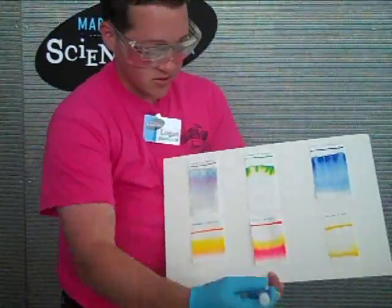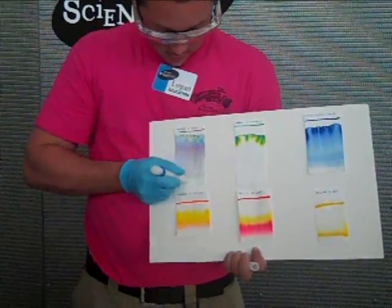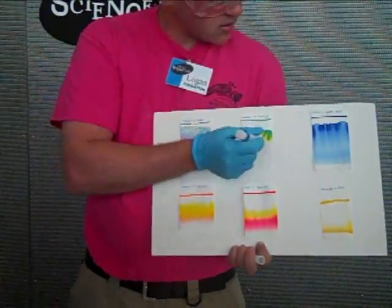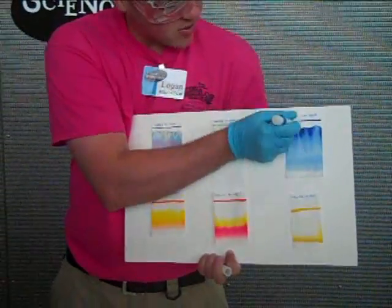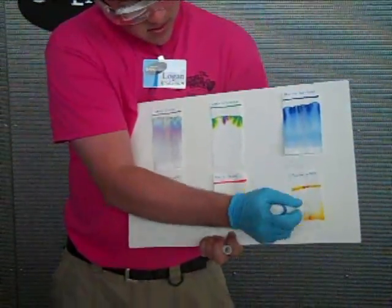And so on with the other colors. Now we're going to take our color change marker, which we know is a strong base and an oxidizer. There we go.